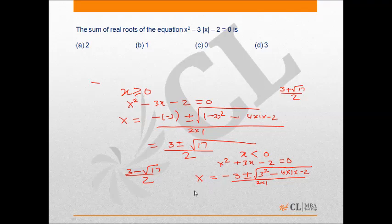We calculate the value of x which will come out to be minus 3 plus minus root 17 by 2. X has to be a negative number. So the value of x which I can assume is minus 3 minus root 17 by 2. These are the 2 values of x which are possible for this equation.